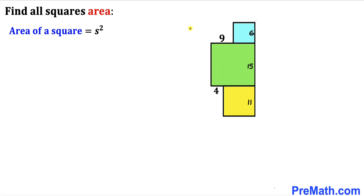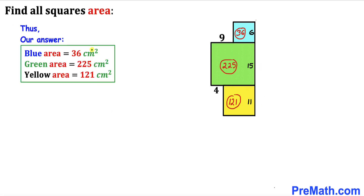For the final step, let's calculate the areas using the formula area equals s squared. The area of the blue square is 6 squared, which is 36 centimeter square. The area of the green square is 15 squared, which is 225 centimeter square. And the area of the yellow square is 11 squared, which is 121 centimeter square.